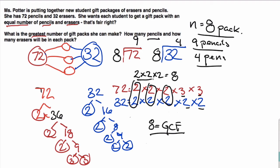To summarize: you find the prime factor strings, circle any common factors, and multiply those common factors together — and that gives you the greatest common factor. Good luck, everybody.